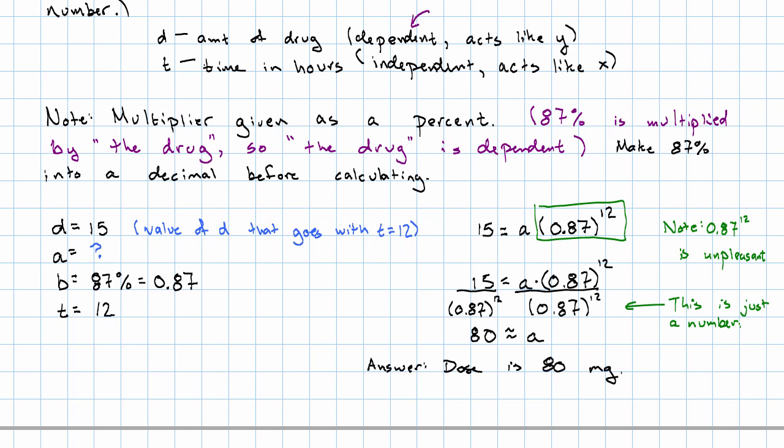The number's an unpleasant decimal, so we're leaving it written as a power of 0.87 for the moment. But it's just a number that we're dividing both sides by.